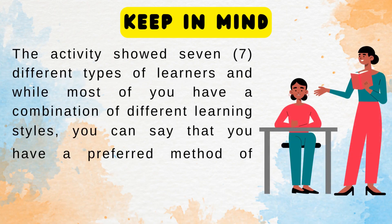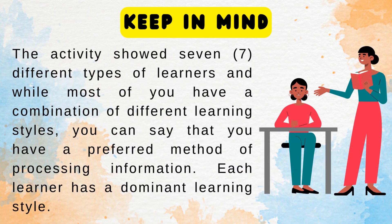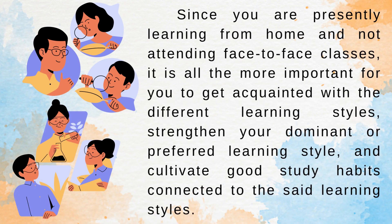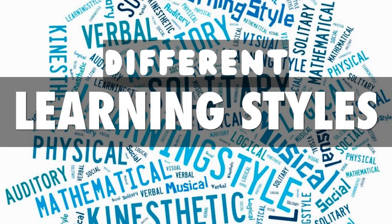Keep in mind. Suggested Time Allotment: 20 Minutes. The activity showed 7 different types of learners, and while most of you have a combination of different learning styles, you can say that you have a preferred method of processing information. Each learner has a dominant learning style. Since you are presently learning from home and not attending face-to-face classes, it is all the more important for you to get acquainted with the different learning styles, strengthen your dominant or preferred learning style, and cultivate good study habits connected to the said learning styles.